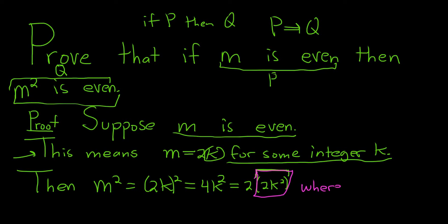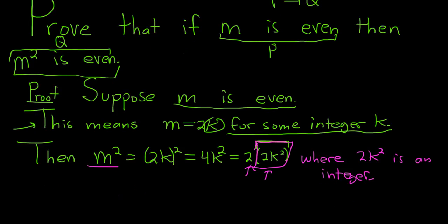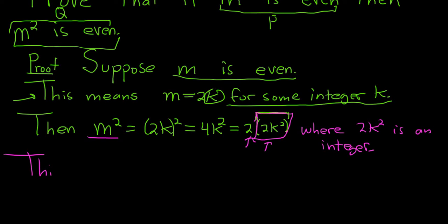So you would say where 2K squared is an integer. So we've showed that M squared is equal to 2 times an integer. This is precisely what it means for M squared to be even. And let's go ahead and write that down. This is precisely what it means for M squared to be even.